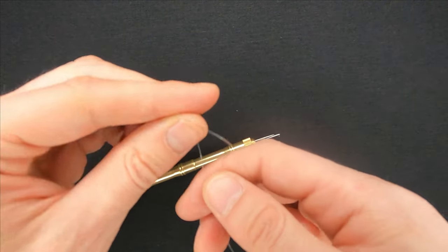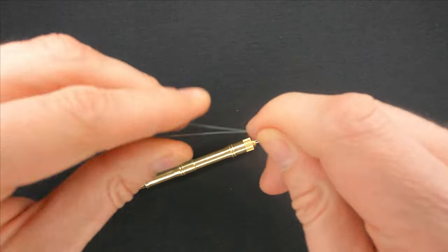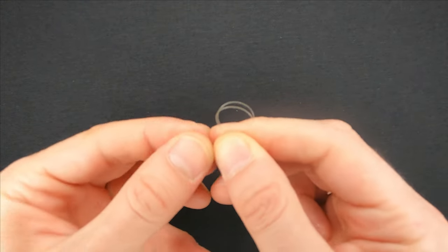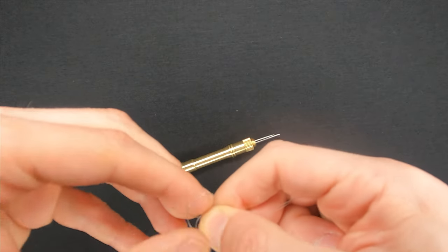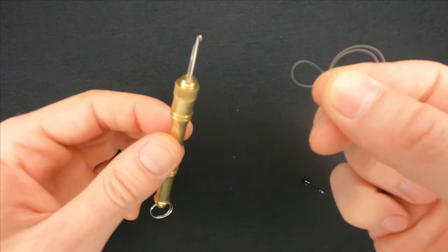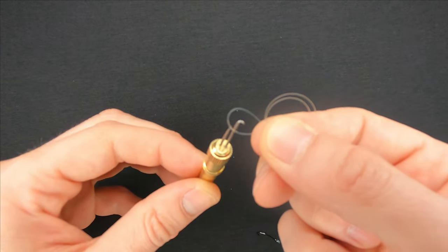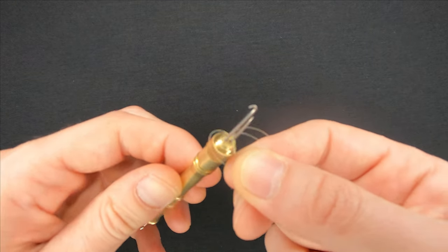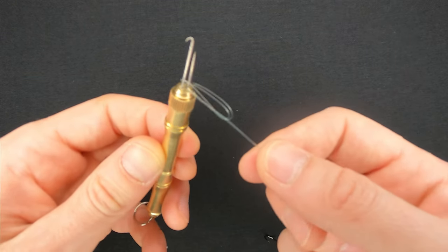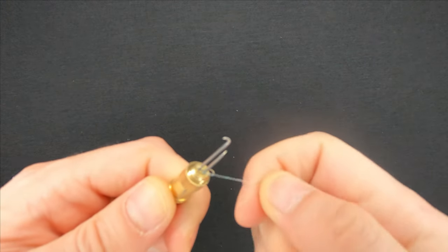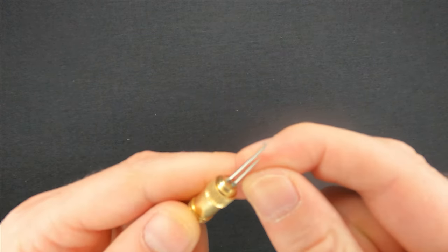You make a double line, wrap it around your index finger, put the single line loop through the double line loop from the bottom to the top, and now you put the single line loop on the longer needle and the double line loop on the shorter one. Pull the line to make the knot tight and remove the double line from the shorter needle.